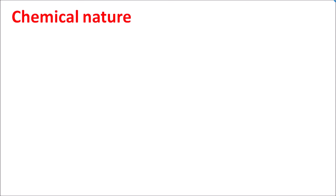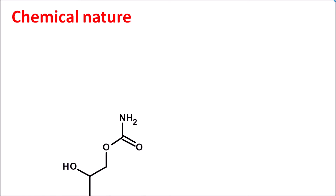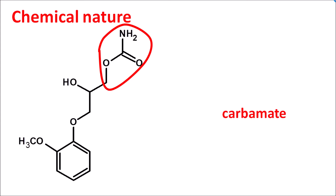First, let us look at the chemical nature of this drug. This is the structure of methocarbamol. Here we can observe one of the functional groups, which is a mixed functional group with ester and amide — this is called carbamate. This carbamate is attached to an alkyl chain. Giving the numbering: 1, 2, 3 — so it is simply a propyl chain. So we can write this as propyl carbamate.